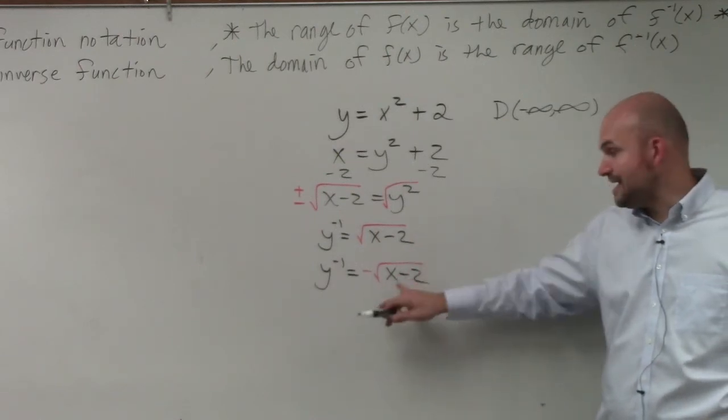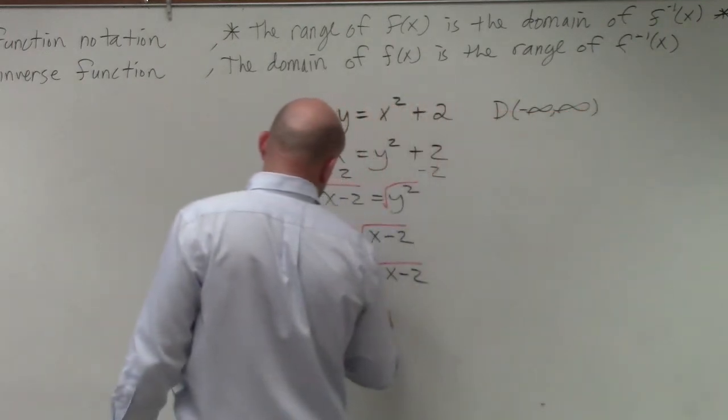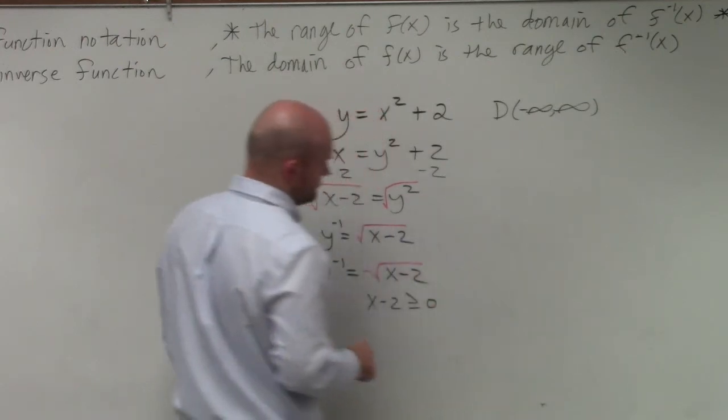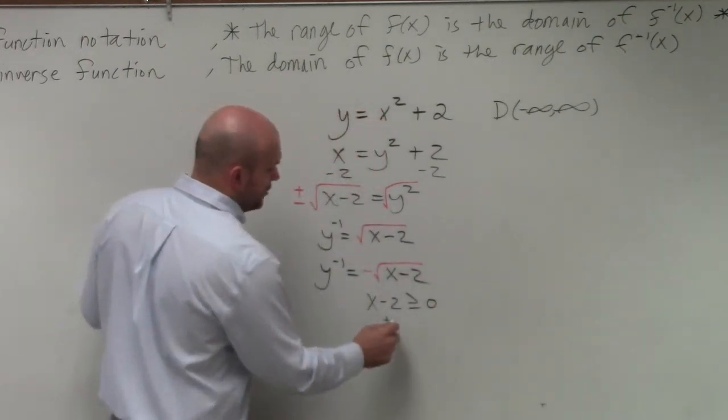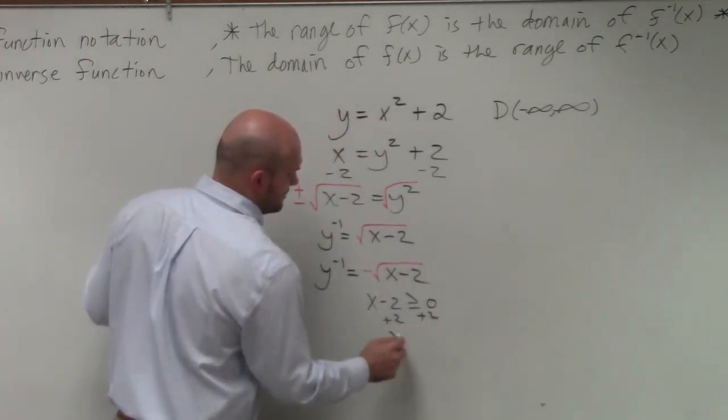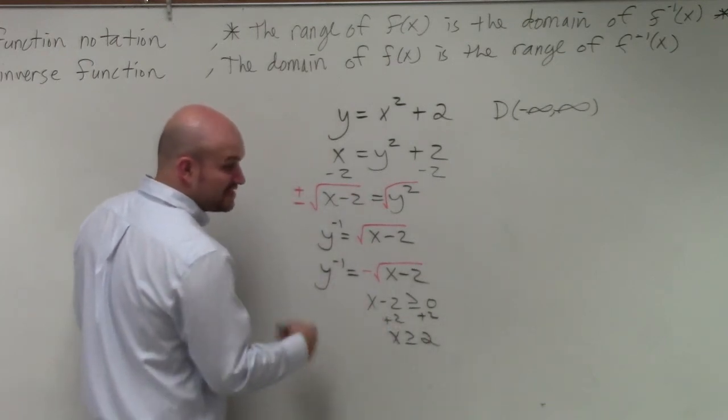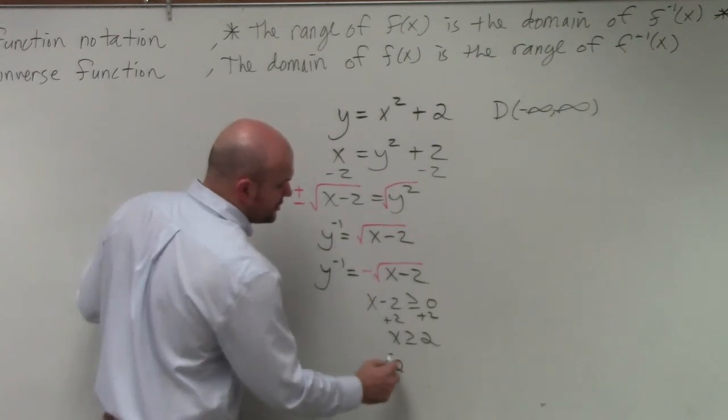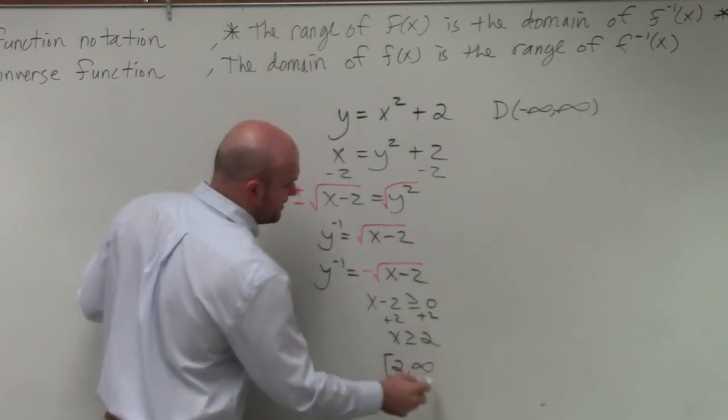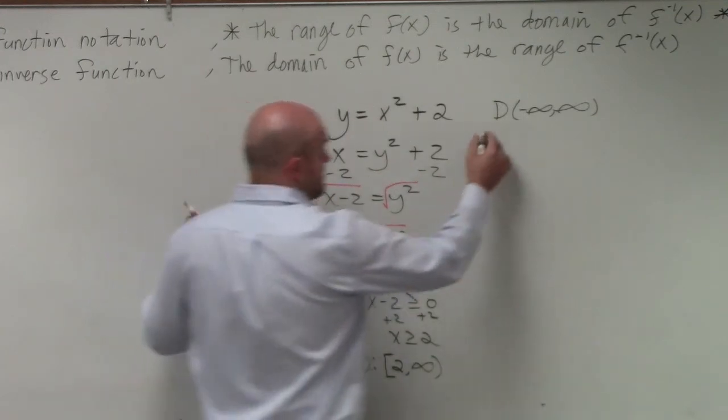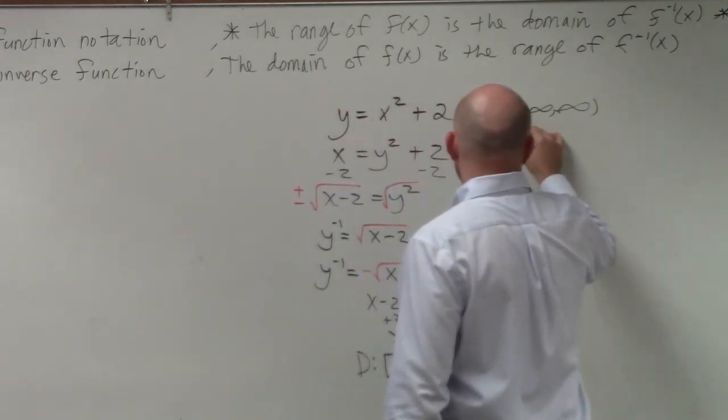The only thing that's affecting the domain is x minus 2 has to be greater than or equal to 0. So we go ahead and solve. x is greater than or equal to 2. So my domain is for all values that are greater than 2, 2 included to infinity. That's my domain of my inverse function. That means that's the range of my original function.